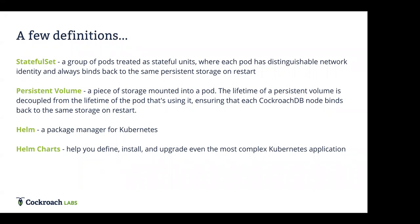The other thing you'll hear us talk about is persistent volumes or persistent volume claims. A persistent volume decouples the lifetime of the storage from the Kubernetes pod — critical not only to stateful sets but to CockroachDB. We're also going to talk about Helm and Helm charts. Much like apt or yum for an OS, Helm is a package manager for Kubernetes — a great way to define an application deployment through a chart, then do things like installs and upgrades.